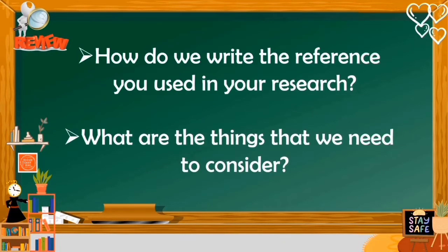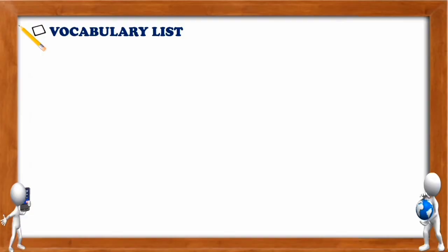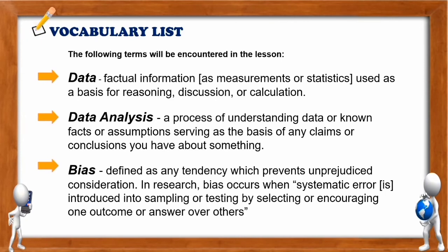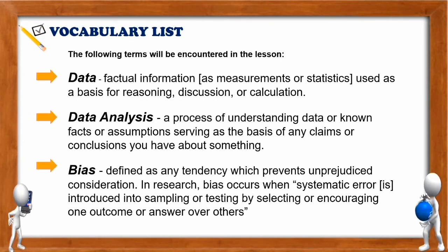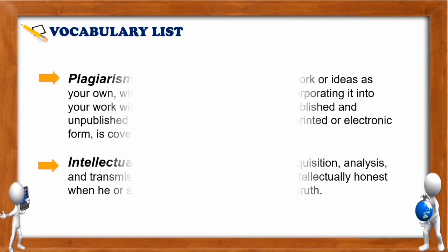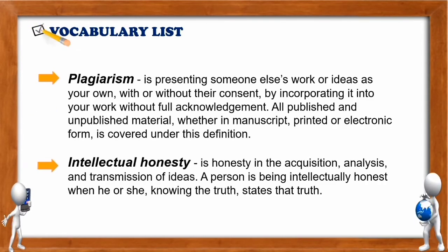Now, how do you write the references you used in your research? And what are the things that we need to consider? For us to be guided with words that we will encounter later, let's have a vocabulary list. We have: data, data analysis, bias, plagiarism, and intellectual honesty.